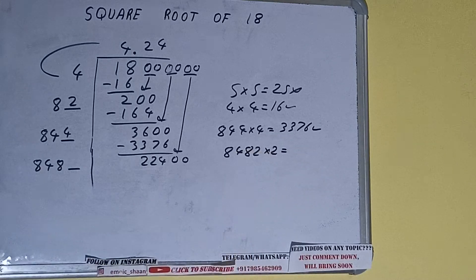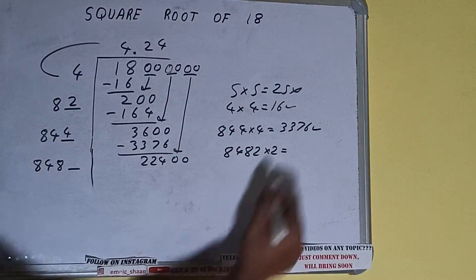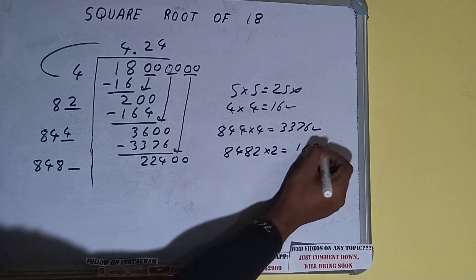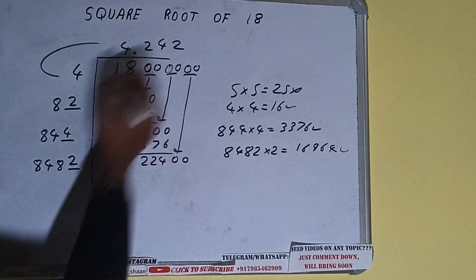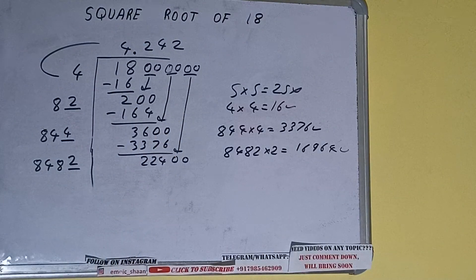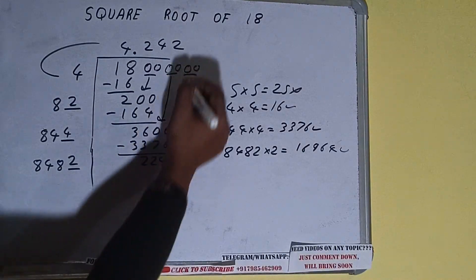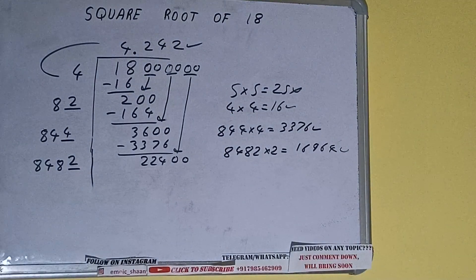8482 into 2 we can try, it will be 16964, which is good to take. So 2 here and 2 here, but we don't need to calculate because we got the answer correct up to 3 decimal places.